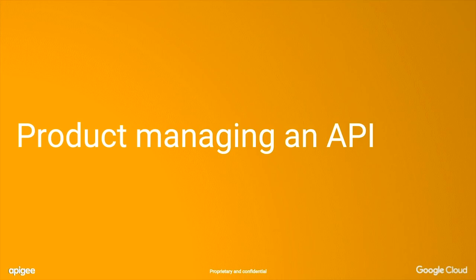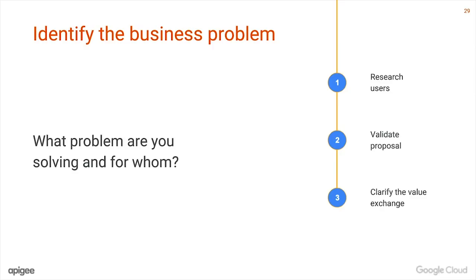Let's switch to the section on what product managing an API really means. I'll try to tie back the framework we presented about product management at a high level, some of the best practices from Google, and actually tie that more firmly into the API world. Starting with no surprise: we focus on what's the business problem we're solving and who are we solving it for.